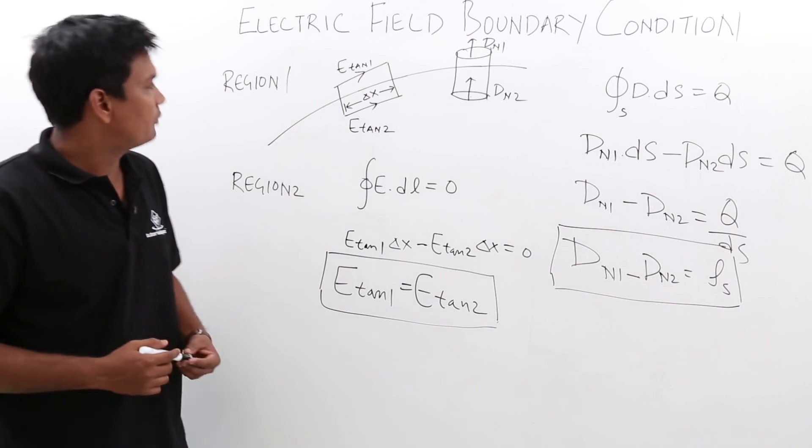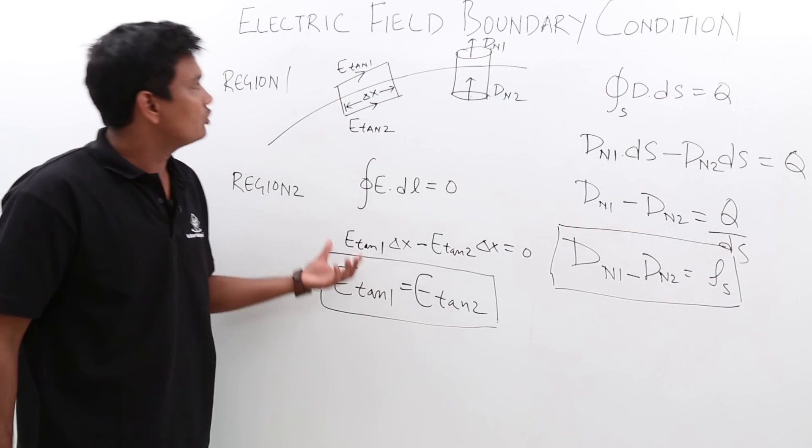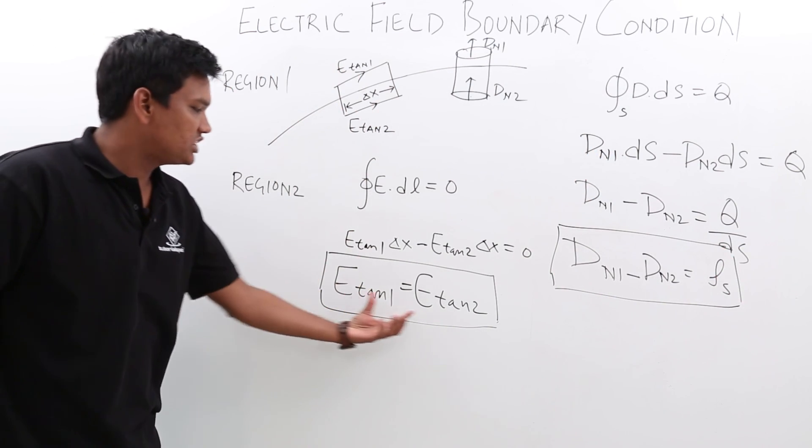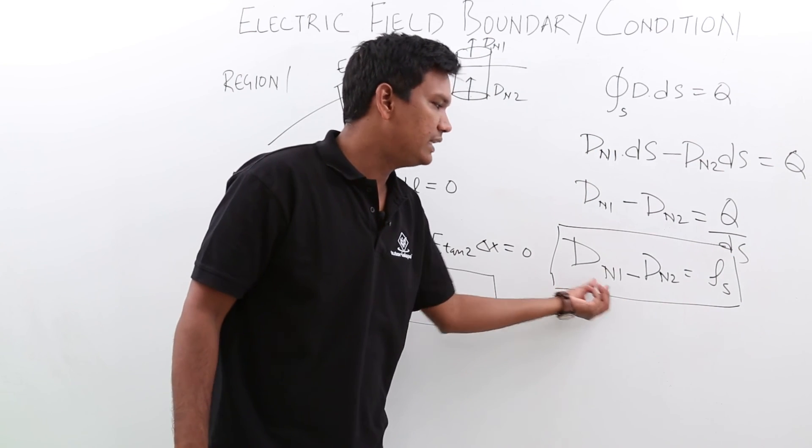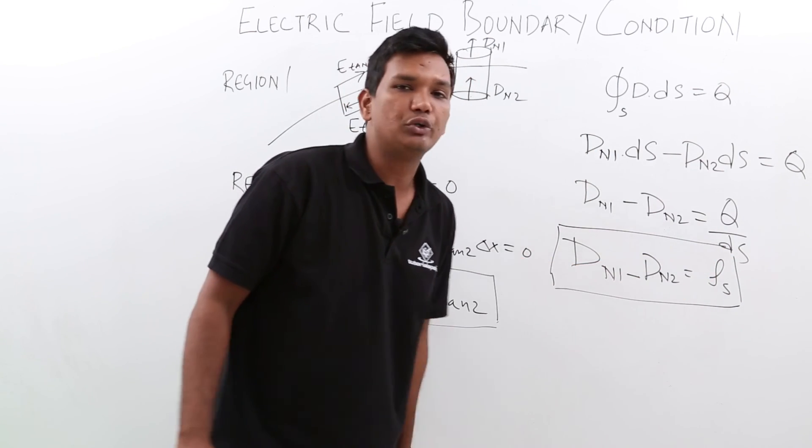We have proved that in case of an electric field, the tangential component would be equal and the normal component would be given by d n 1 minus d n 2 is equal to rho s.